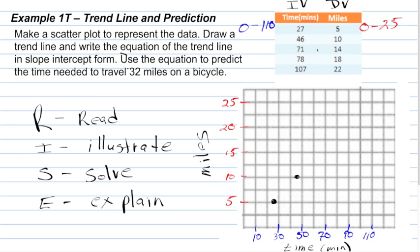The third point is 71, 14, so over to 71, and up to 14, which would be right below 15. 78 and 18. So, in 78 minutes, the person travels 18 miles. And finally, in 107 minutes, the person travels 22 miles. So, we've created the scatter plot.